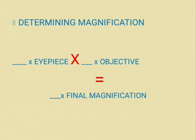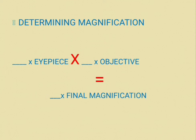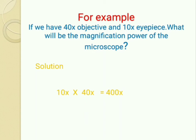To determine the magnification power of a microscope, we use the formula: power of eyepiece multiplied by power of objective equals final magnification. For example, if we have a 40x objective and a 10x eyepiece, then 10x multiplied by 40x equals 400x — so the final magnification of that microscope is 400x.